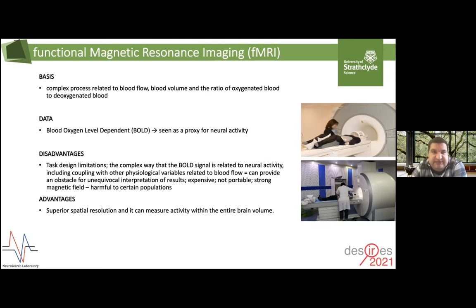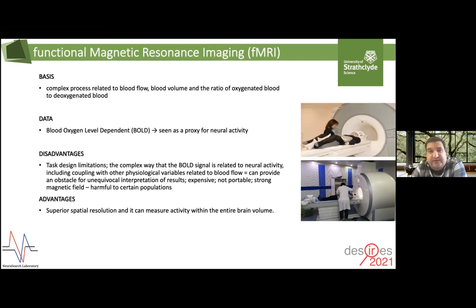fMRI is a complex process related to measuring the blood flow, blood volume, and the ratio of oxygenated blood to deoxygenated blood. The signal we capture is called blood oxygenation level dependent, or BOLD, and it acts as a proxy to neural activity. It has some disadvantages: one being the limitation of the types of tasks you can design, because participants have to lie down and stay still while in an MRI machine. The BOLD signal acting as a proxy can also couple with other physiological variables. But it has great advantages — one is superior spatial resolution, and it allows measuring the brain activity of an entire brain volume.